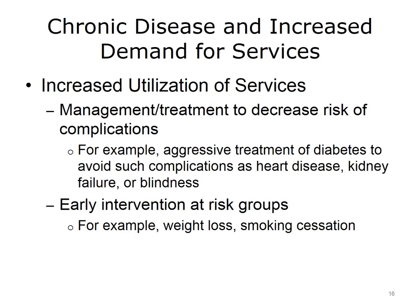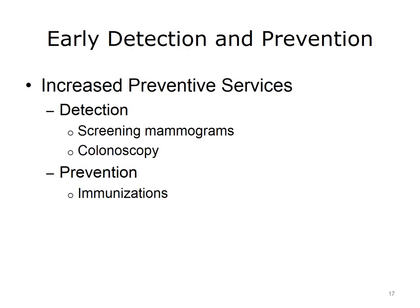Care for chronic illness requires increased utilization of healthcare services and resources. Management of chronic illness attempts to prevent further deterioration, maintain a satisfactory state of health and well-being, and decrease the risk of complications. For example, aggressive control of blood sugar can avoid damage to small blood vessels that could lead to heart disease, kidney failure, or blindness. Early intervention with at-risk groups such as smokers or the obese may increase spending but has the potential to result in lower long-term costs. Additional resources are spent on early detection, such as screening mammograms or immunizations.